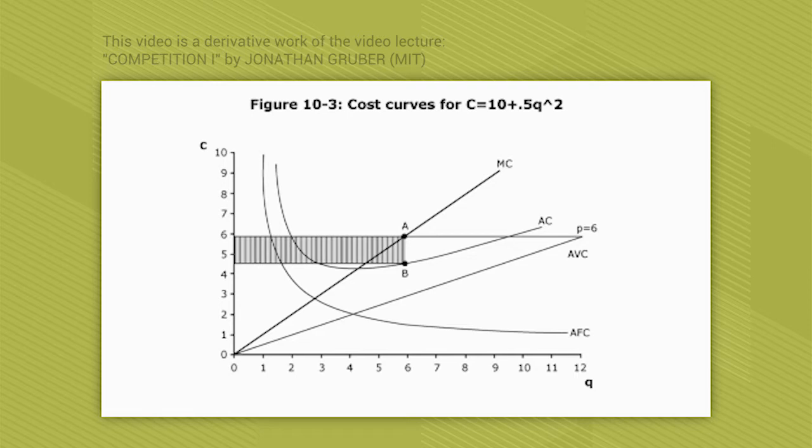Average cost is that line in the middle there. You have an average variable cost that's linear, with a slope of 1. You have an average fixed cost that's everywhere declining because your fixed cost of 10 is declining as you produce more. And you have a marginal cost of q. So your marginal cost of 1 unit is 1, your marginal cost of 2 units is 2, et cetera.